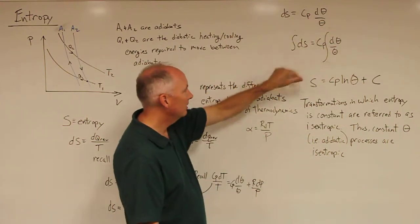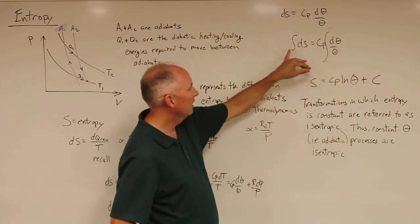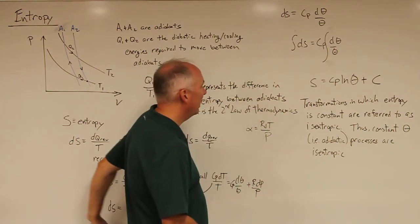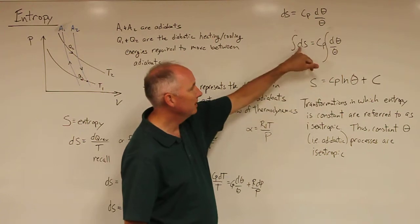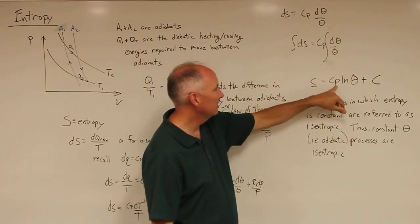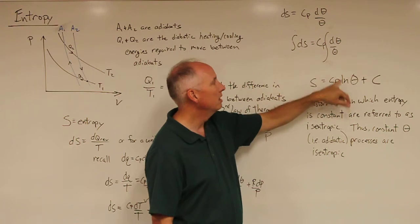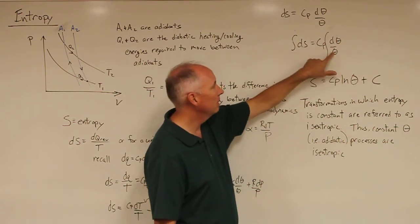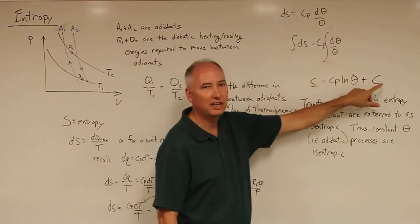If we wanted to integrate that, S is going to be the integral of ds, which equals C sub P times the natural logarithm of the potential temperature plus a constant.